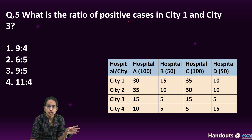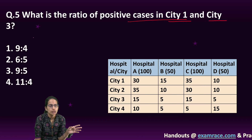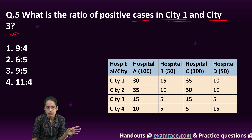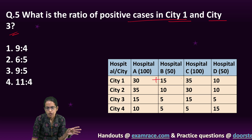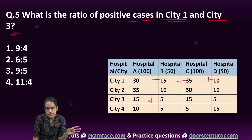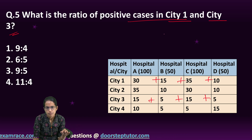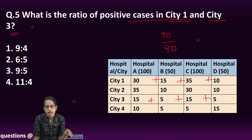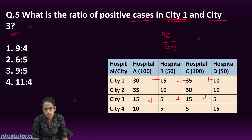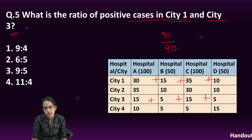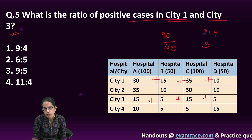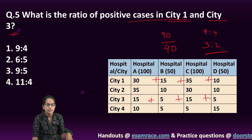What is the ratio of positive cases in city 1 to positive cases in city 3? For city 1, I add all values horizontally, and for city 3 the same. Let's say it's 90 in city 1 and 40 in city 3. So the ratio is 90:40, which simplifies to 9:4.